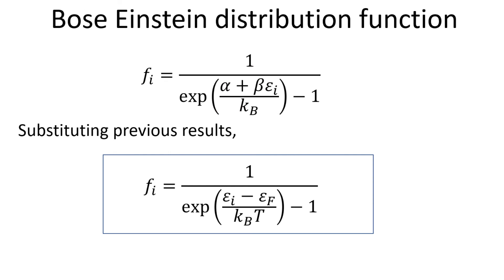With this, we can easily determine beta to be 1 over temperature T, and alpha to be minus the Fermi energy divided by T. This then allows us to arrive at the final expression of the Bose-Einstein distribution function.